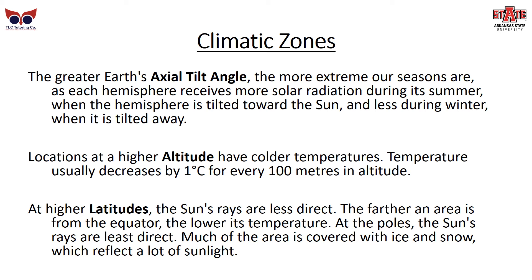Because of the Earth's axial tilt, altitude, and latitude, we end up with different climatic zones. The Earth's tilt makes our seasons change — each hemisphere receives more solar radiation during its summer, when tilted toward the sun, and less during winter, when tilted away. Locations at higher altitude have colder temperatures, decreasing by about one degree Celsius for every 100 meters. At higher latitudes — further from the equator — the sun's rays are less direct, so temperatures are lower. At the poles, the sun's rays are least direct, and much of the area is covered with ice and snow, which reflect a lot of sunlight.